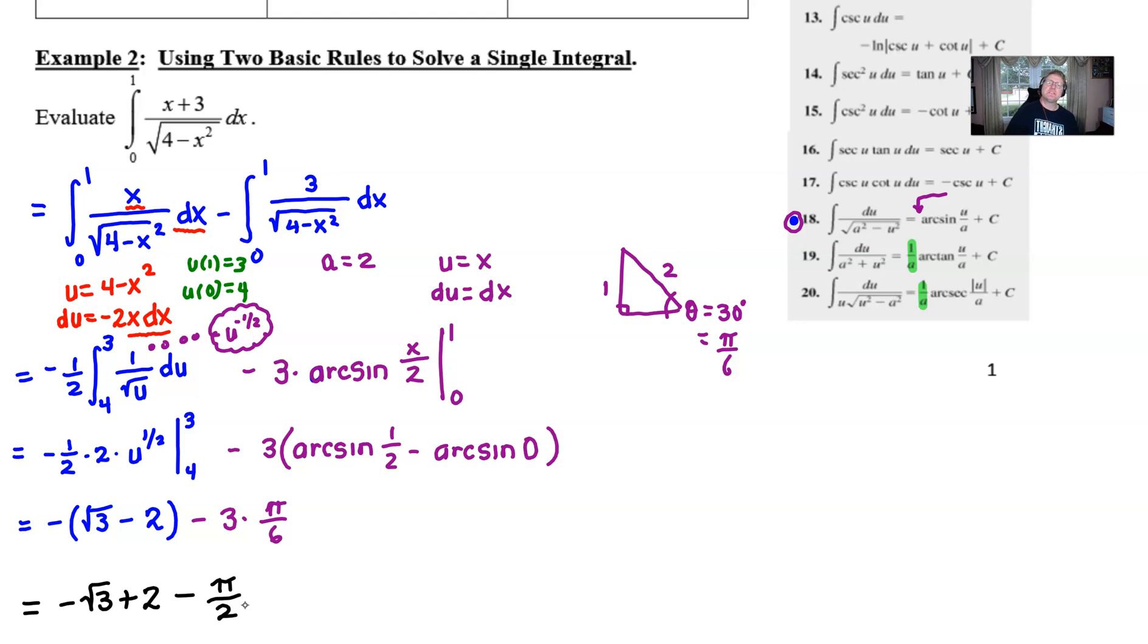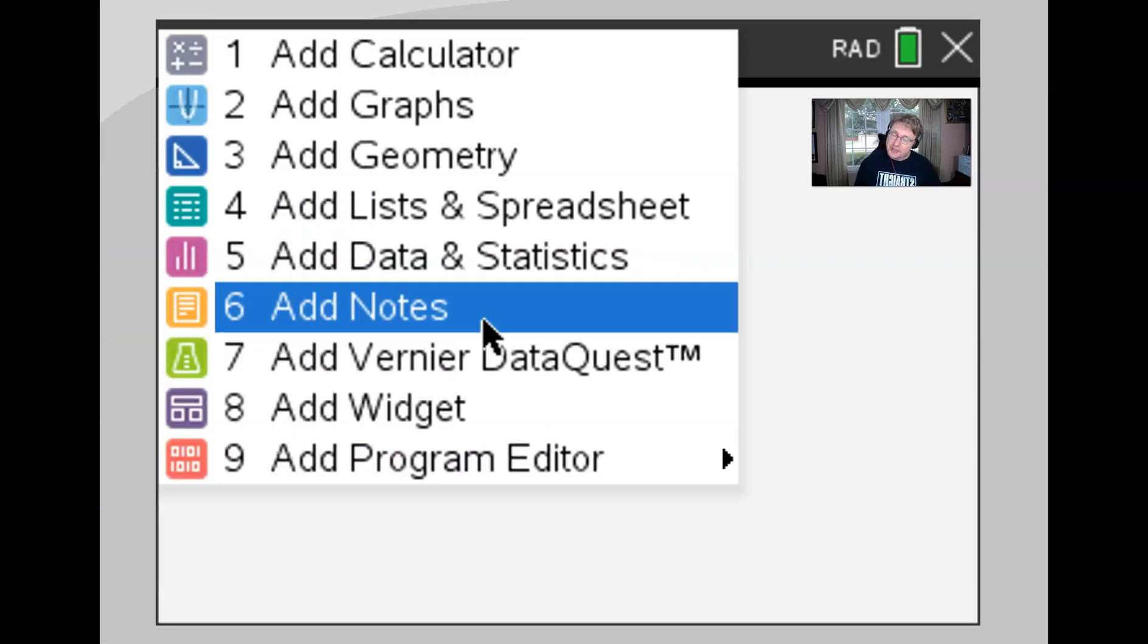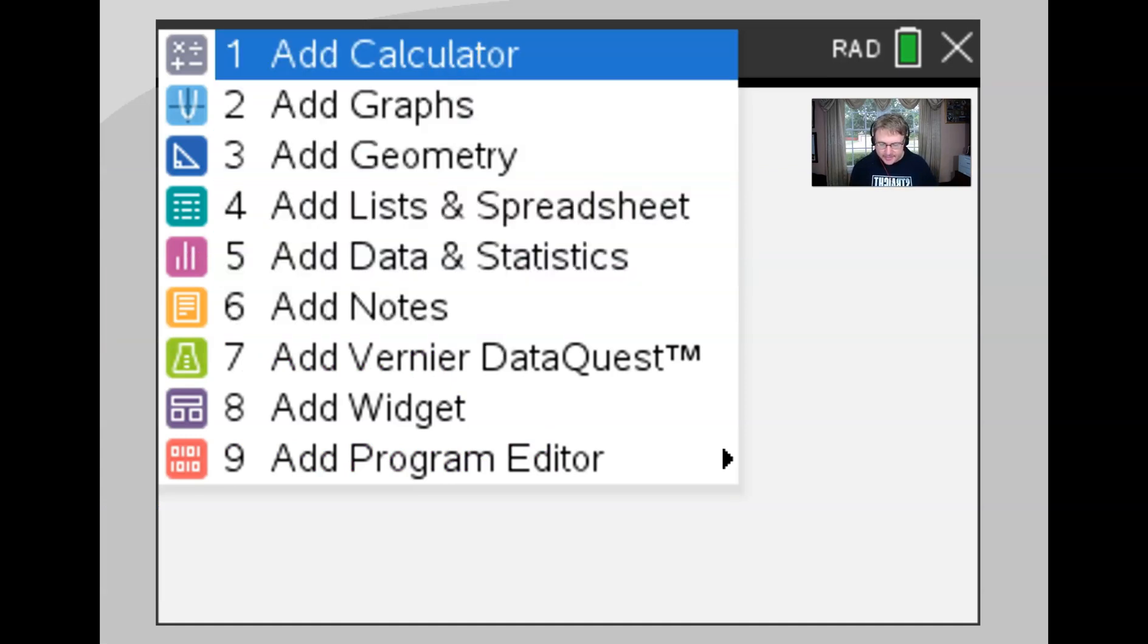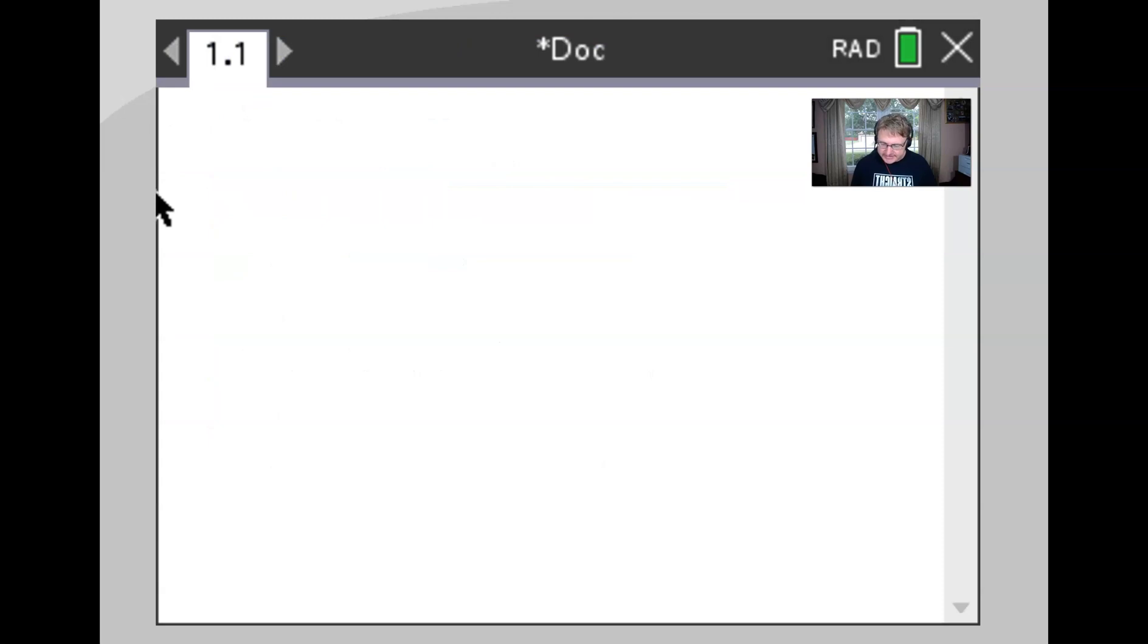Now I'm going to switch over to the TI-Inspire, we're going to check this answer. So here we are with the software, I'm going to go ahead and add a calculator page and I'm going to set up this definite integral, shift plus I believe, and we know that the boundaries were from 0 to 1. Let's put that 1 in the right spot here and then we are going to take this and we're going to say control divide so I can get a fraction.